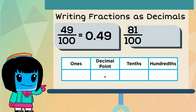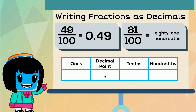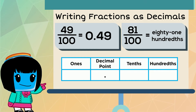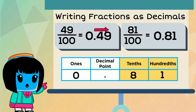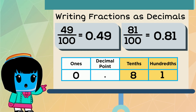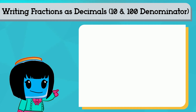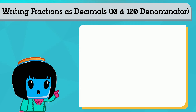The fraction 81 over 100 is read as 81 hundredths, so we write this decimal as... Let's keep practicing writing fractions with denominators of 10 and 100 as decimals.